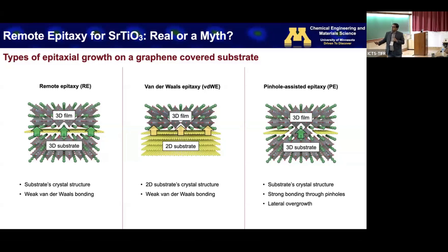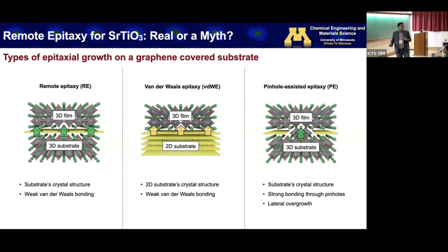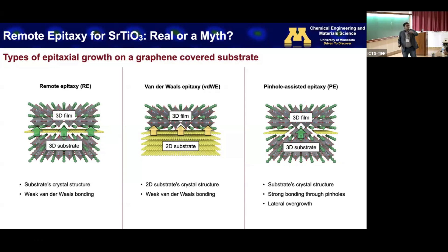Let me briefly introduce these three concepts. In remote epitaxy: you have substrate, a layer of 2D material, and due to the interpenetrating surface potential, the film grows with the same structure as the underlying substrate. In wonderwall epitaxy: your 3D film grows influenced by the 2D material itself, nothing to do with the underlying substrate. In pinhole-assisted epitaxy: think about a hole within the graphene — part of the film grows through the hole and directly contacts the substrate, then grows laterally onto the graphene via lateral epitaxial overgrowth. All three can result in growth on top of the 2D material and potentially allow exfoliation. The question is: which mechanism is responsible?